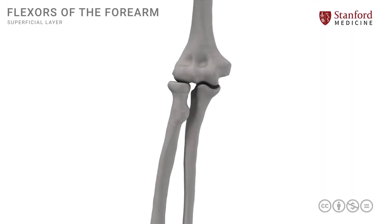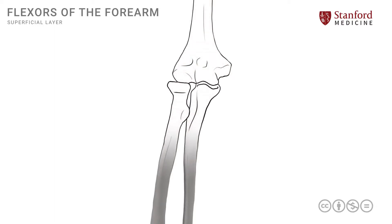In this lesson, we will review the muscles that participate in the formation of the flexor group of forearms. Specifically, we will look at the superficial muscles of this group. Let's start by looking at a simple diagram of the anterior part of the elbow joint and the proximal forearm. The flexor muscles of the forearm can be thought of as being positioned in layers, and the superficial group is what we will look at in this lesson.